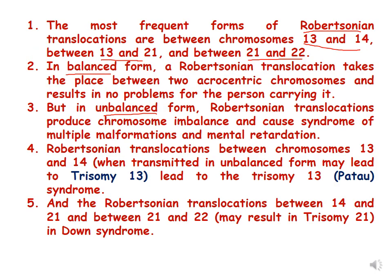Let us read this slide point by point. The most frequent forms of translocations are between chromosomes 13 and 14, between 13 and 21, and between 21 and 22. So translocations are mostly observed between these three pairs of chromosomes: 13 and 14, 13 and 21, and 21 and 22.